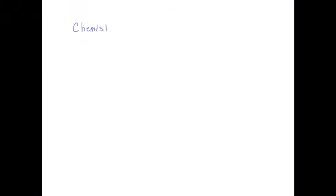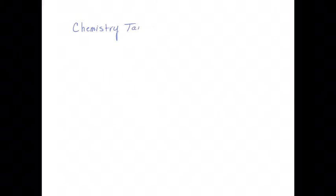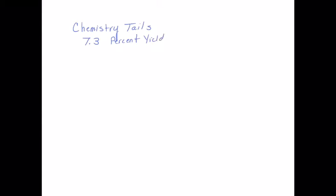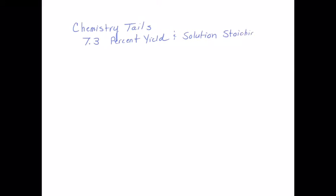Welcome to Chemistry Tales. This is Hel 7.3. We are in our chapter on Stoichiometry. In this segment, we are going to look at what we call the percent yield of a reaction, taking into account the reality of carrying out chemical reactions and the fact that we rarely or never are able to capture the theoretical yield. We are also going to look at solution stoichiometry and the process of titrations.